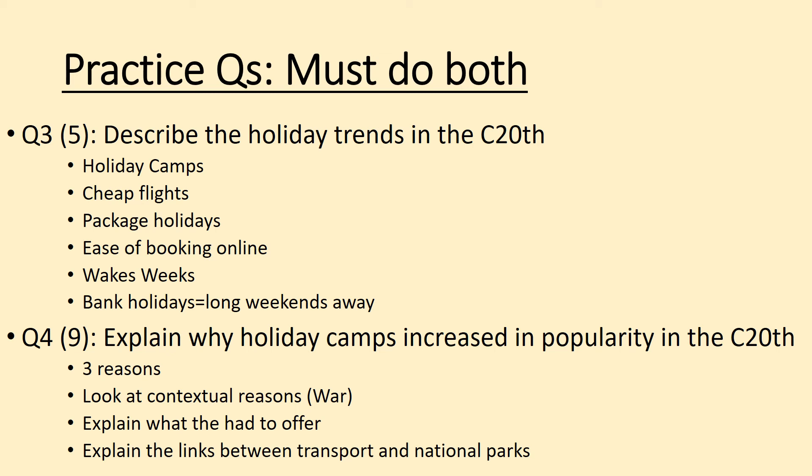Then try a Question 4, worth nine marks: explain why holiday camps increased in popularity in the 20th century. For this we need three reasons and you must focus on your explanation — why do these lead to an increase in popularity? Look at contextual reasons: the war had ended, people wanted more fresh air and a healthier lifestyle. Talk about redcoats and the competitions on offer. Explain links between transport and national parks: most holiday camps are on a railway line, a main motorway, or near a national park, and you need to explain why that made them more popular.